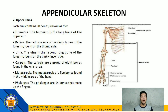Number 2: Upper limbs. Each arm contains 30 bones, including the humerus, which is the long bone of the upper arm; the radius, one of two long bones of the forearm found on the thumb side; the ulna, the second long bone of the forearm on the pinky finger side; the carpals, a group of 8 bones in the wrist area; the metacarpals, 5 bones in the middle area of the hand; and the phalanges, 14 bones that make up the fingers.